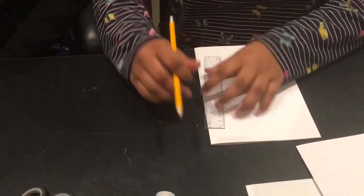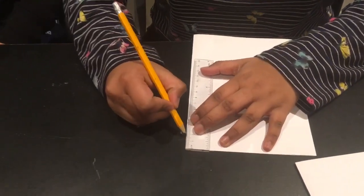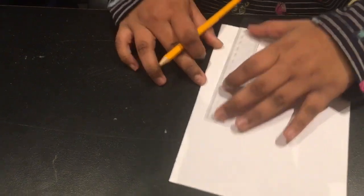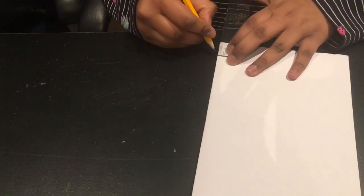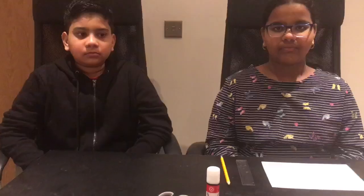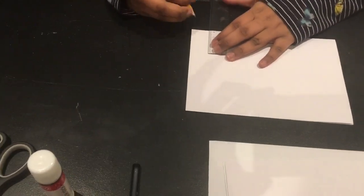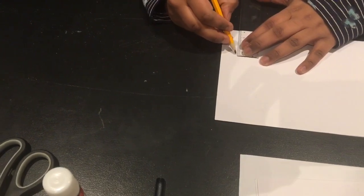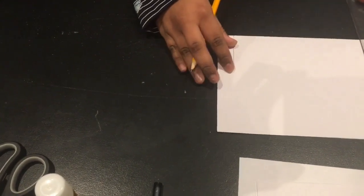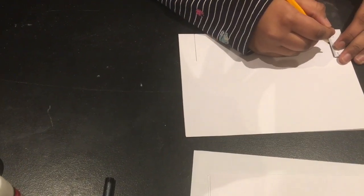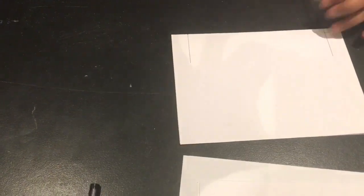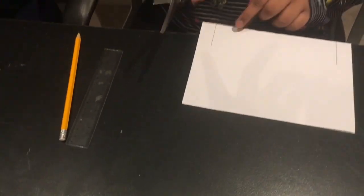Step two is to mark two centimeters from the opposite edges, and it's only for one sheet of paper. Step three is to measure 4.3 centimeters long lines from the dots. Step four is to cut along the lines using your scissors.